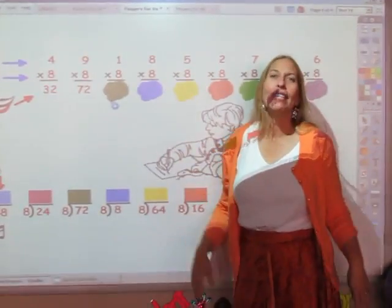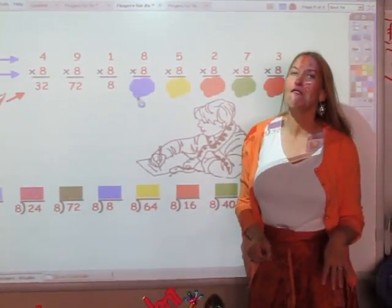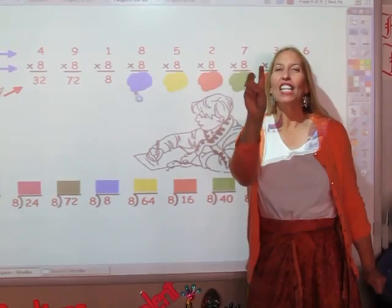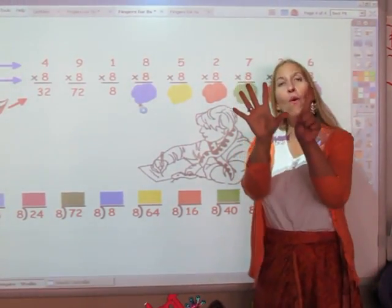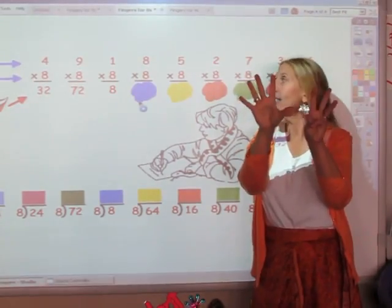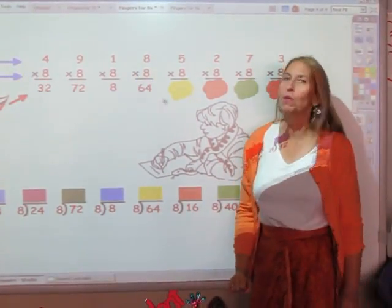One times eight. It's eight. I'm going to sing the eight song for eight fingers. 8, 16, 24, 32, 40, 48, 56, 64. 64 is my answer.